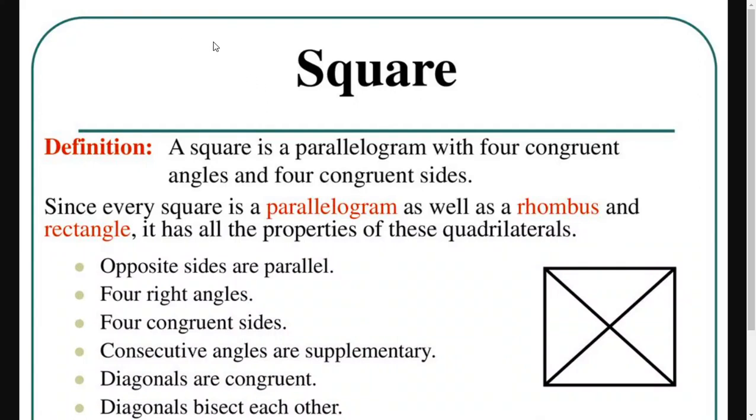This is today's family of squares. A square is a parallelogram, also called a quadrilateral, with four congruent angles and four congruent sides. Congruent basically means of the same measure.